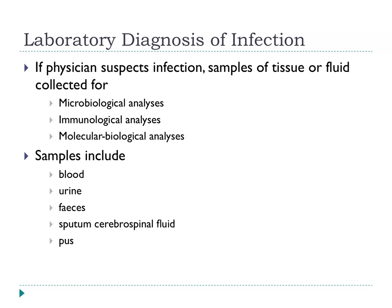When using the laboratory to diagnose infection, the physician who suspects infection will collect samples of tissue and fluid for microbiological investigation. There may be immunological investigations done, and more recently molecular biological techniques are used to analyse these samples. Examples of samples include blood — taken as blood culture into a special bottle — urine, faeces, sputum, cerebrospinal fluid, and pus. Biopsies from tissues can also be taken and investigated.